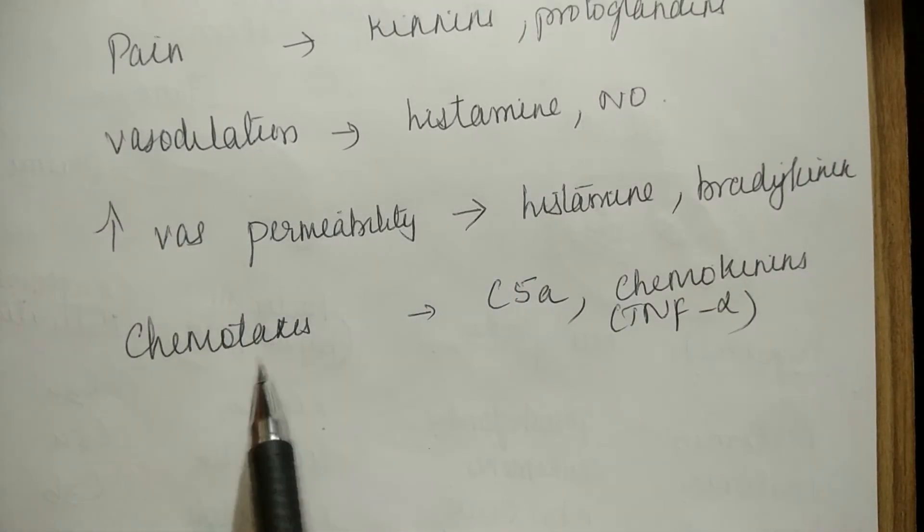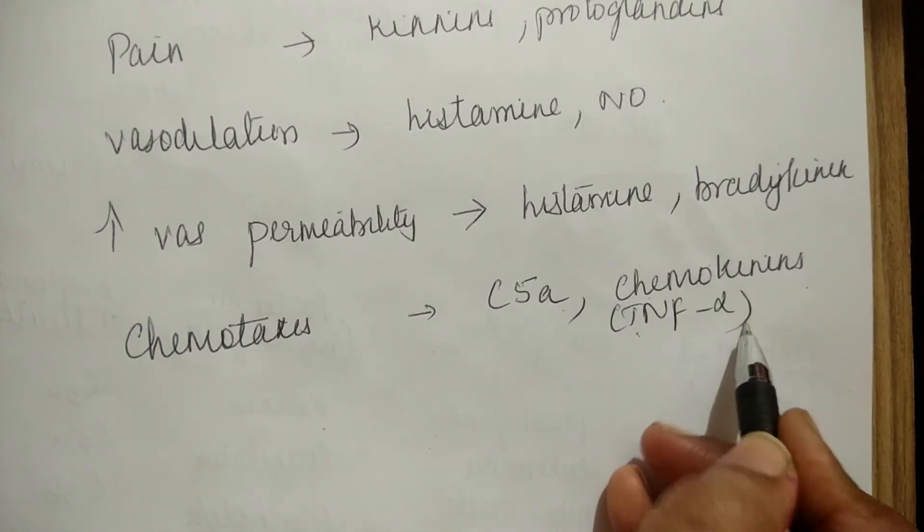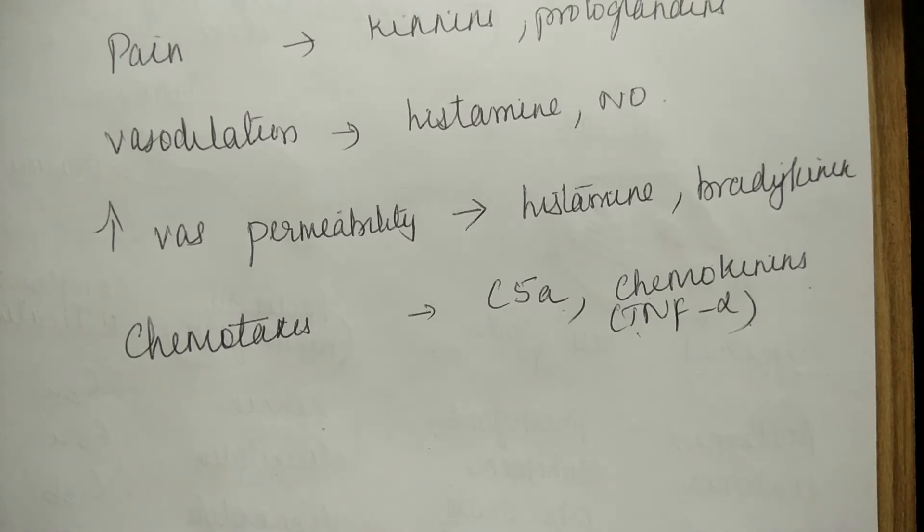Chemotaxis attracts cells to injury sites: C5a, chemokines, TNF-alpha produce chemotaxis. So next, chronic inflammation.